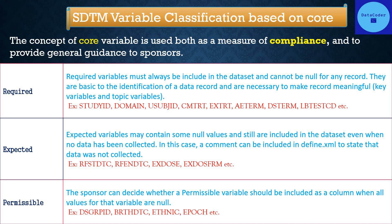Expected variables may contain some null values but are still included in the dataset even when no data has been collected. In this case, a comment can be included in define.xml to state that data was not collected. Examples include RFSTDTC, RFENDTC, EXDOSE, and EXDOSFRM.